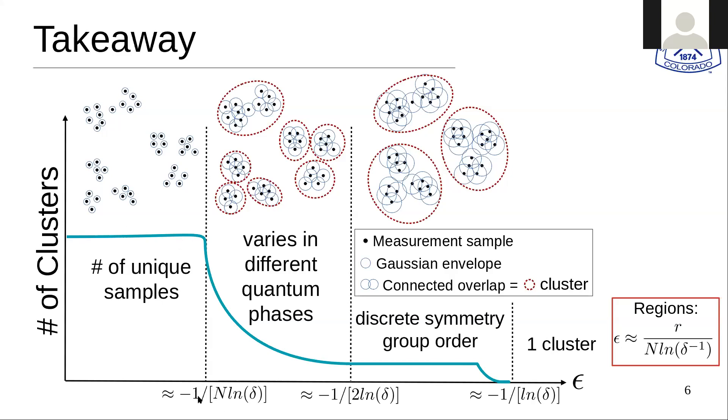At intermediate values, essentially between any single one and half of them, which is the average distance, the middle line, you get very different behavior for different phases. We explore this in more detail in our paper for particular models. In particular, you can extract different phases, or you can tell that there are different phases in this intermediate epsilon regime, and they very much separate often. For an even larger value of epsilon, you can also often get the exact discrete symmetry group order, which is quite an interesting feature. This is because these states are maximally separated.